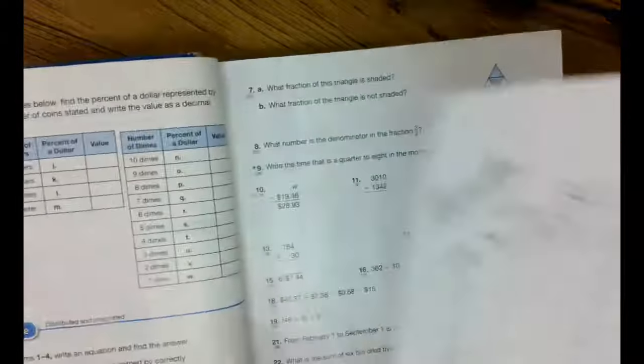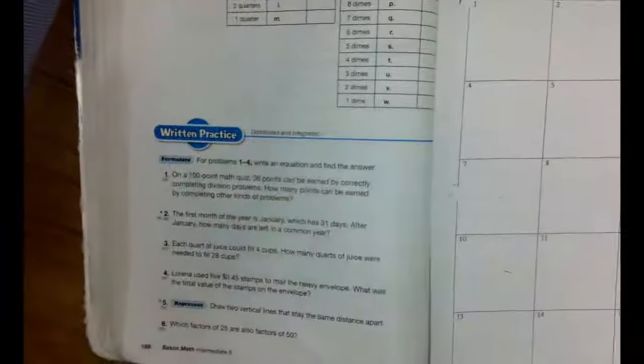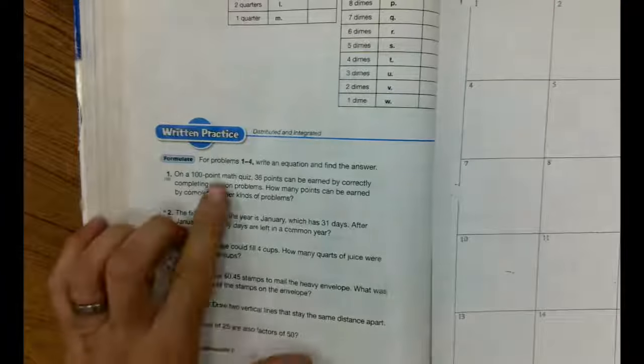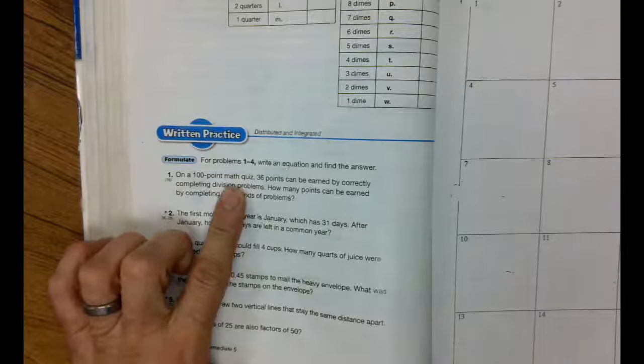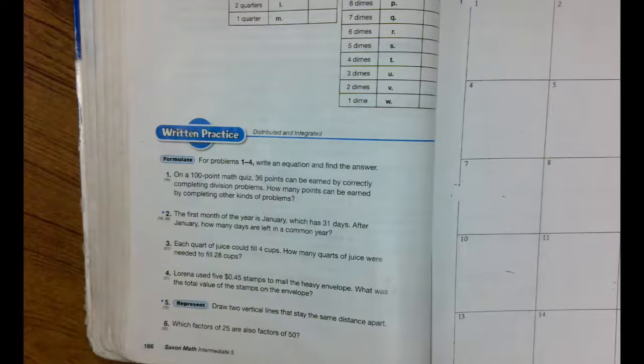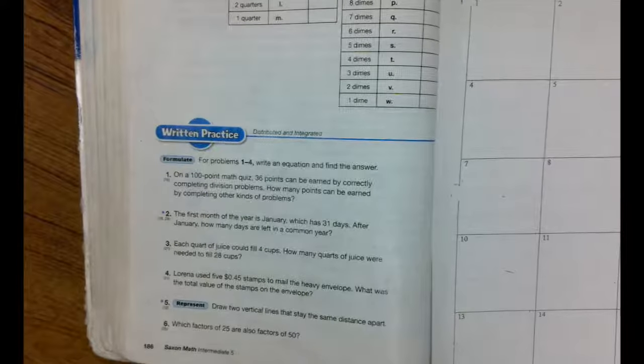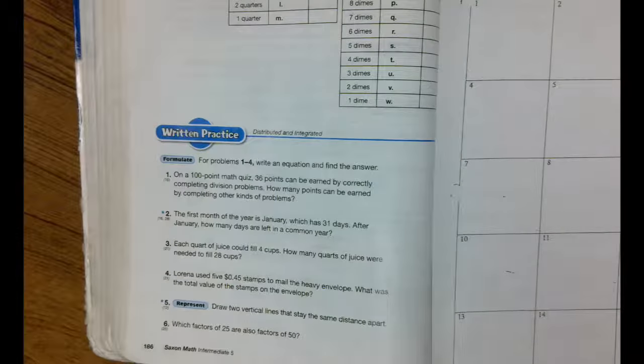Take a look at number one. Number one says, on a 100-point math quiz, 36 points can be earned by correctly completing division problems. How many points can be earned by completing other kinds of problems?